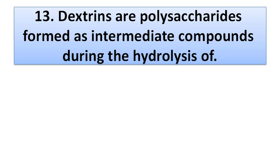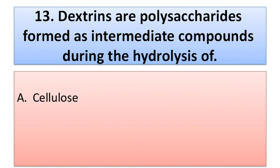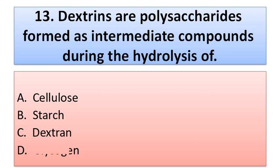Question number thirteen: dextrins are polysaccharides formed as intermediate compounds during the hydrolysis of — option A: cellulose, option B: starch, option C: dextrin, option D: glycogen. Option B, starch, is the correct answer.